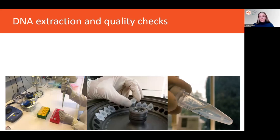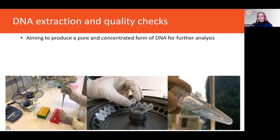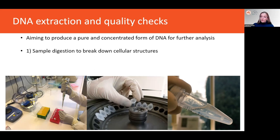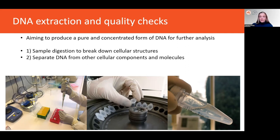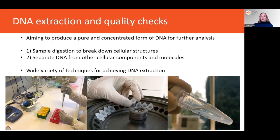After samples have been collected, the next step in a conservation genomics project is to extract the genetic material from the collected samples. This process aims to produce a pure and concentrated form of DNA in an aqueous solution for further analyses. Broadly, the main steps involved here are to firstly digest the sample — that is, use chemical or physical disruption to break down the cellular structures — and then secondly, to separate the DNA from the other cellular debris, lipids, proteins, and other chemicals. There's a very wide variety of techniques for achieving these steps, and the choice of method will be guided by the sample type and the DNA characteristics required for the next steps.